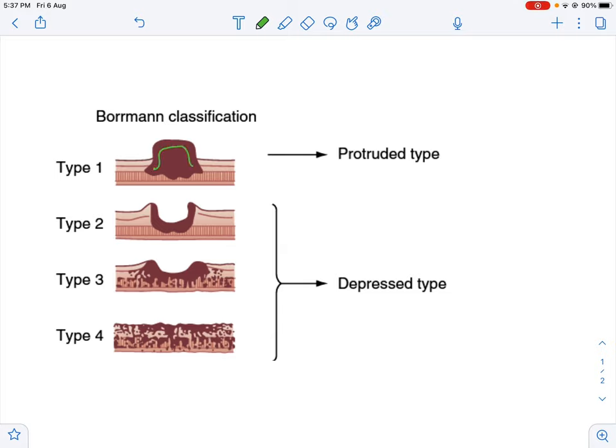And all the other types, that is the fungating, ulcerative, and the diffuse type, when compared to the protruded type, these look depressed.